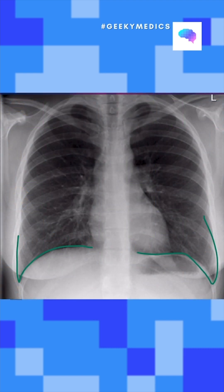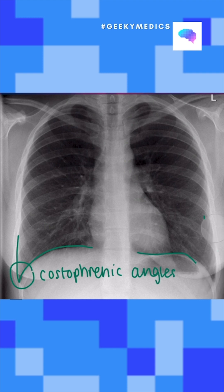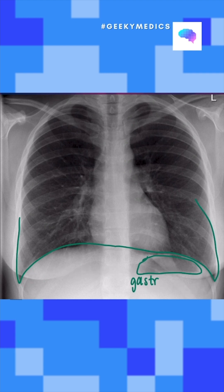D is for diaphragms. We want to make sure that the costophrenic angles are sharp and that there's no blunting, because that can indicate pleural effusion. We also want to be checking air under the diaphragm for gastric bubbles, but also pneumoperitoneums.